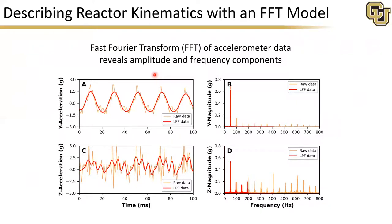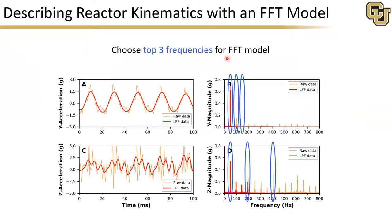From the acceleration data, we can see that the y-acceleration — along the primary flow direction — and the z-acceleration — in the direction of gravity — have some significant differences. If we perform a fast Fourier transform on this acceleration data, we can reveal the key amplitude and frequency components, as shown on the right-hand side. For DEM modeling we want a continuous function for reactor motion, but this accelerometer data is discrete. So we choose the top three frequencies from this FFT decomposition and sum them together to rebuild the original accelerometer data as a continuous function for acceleration.